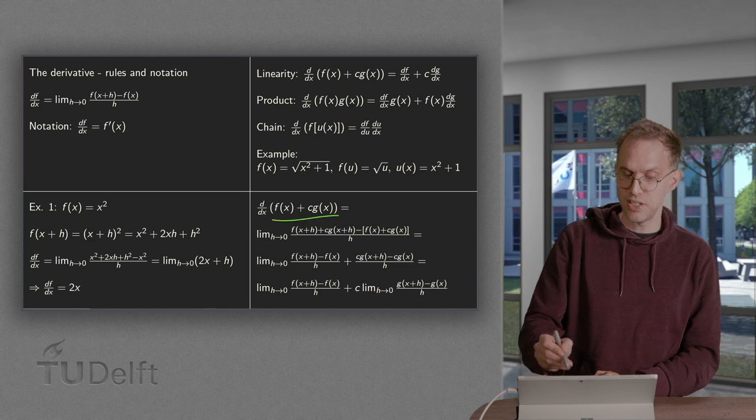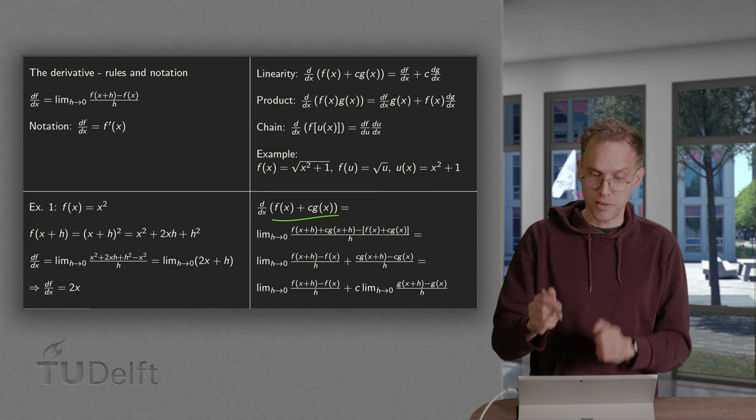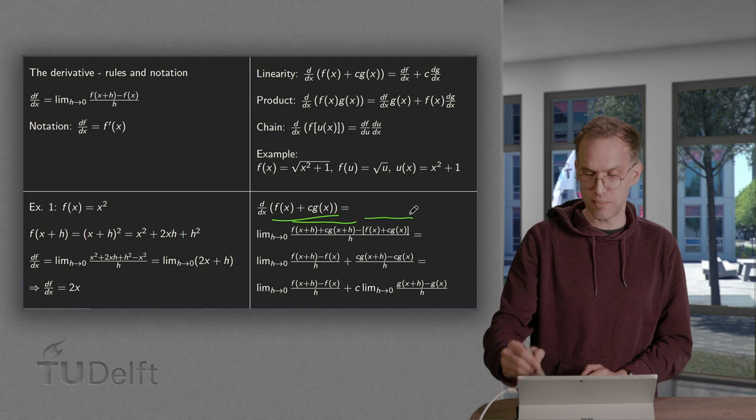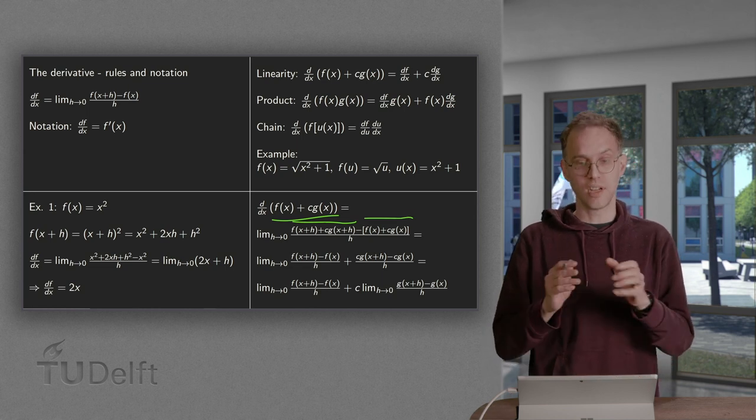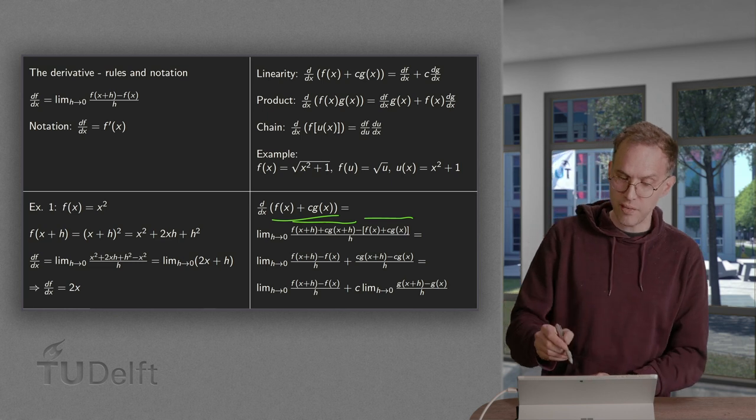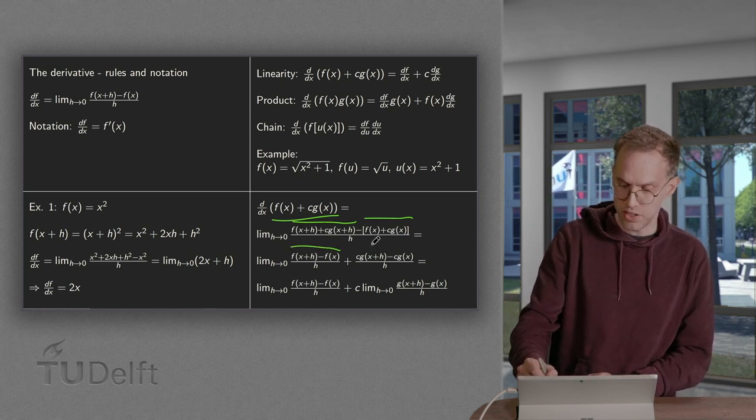So the derivative of f + cg. What do we do? We have f + cg in x+h over here, minus f + cg in x. Take the difference. We reorder the terms a bit. Put both f's here and both g's over there.